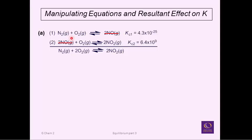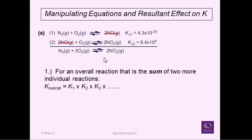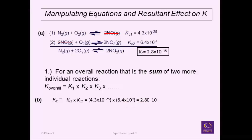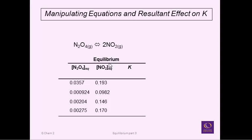Now here's where we apply the rule: if you take two equilibrium expressions and add them together, what's the equilibrium constant for the new combined equation? The rule says you don't add K's like you would add energies in Hess's law — you multiply K's. So 4.3×10⁻²⁵ multiplied by 6.4×10⁹ gives 2.8×10⁻¹⁰. You can then write the equilibrium expression by putting products over reactants raised to the appropriate powers. That's the application of Rule 1.